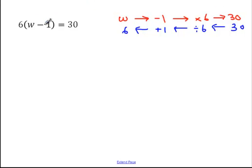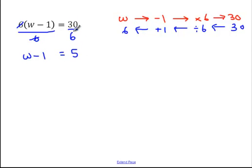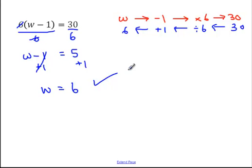Algebraically, this is what it looks like: w minus 1 times 6. The last thing we did was times 6, so the first thing we want to do is divide both sides by 6. That gives us w minus 1 on the left, and 30 divided by 6 equals 5 on the right. Note that if you don't get a whole number when you divide, it can get more complicated, and you might just want to expand the brackets first. Now we've got w minus 1 equals 5, so add 1 to both sides, leaving w is equal to 6.